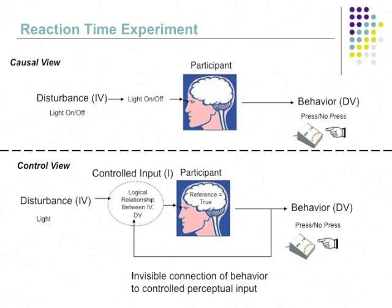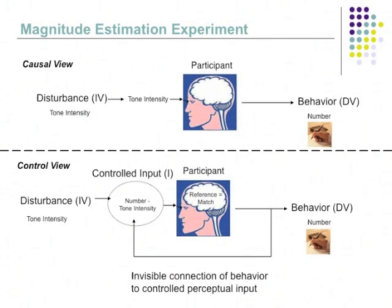Now let's go to magnitude estimation — you might not be familiar with this task. It's a kind of simple, basic perceptual task. The subject is asked to say a number whose size is proportional to the intensity of the sensation they get when you play, say, a tone. From the causal view, as the tone intensity goes up, it causes bigger numbers to come out of the person. But from the control view, I think what's going on in a magnitude estimation task is also a closed loop situation. You're asking the person to have a goal of keeping the number they produce equal to their perception of the intensity of the tone. So again, it's a closed loop task.